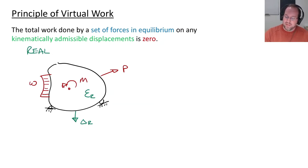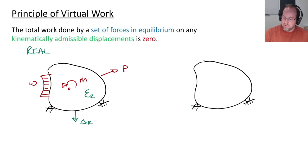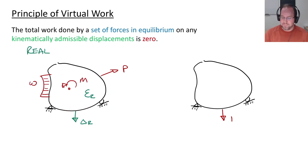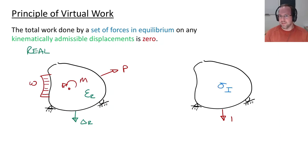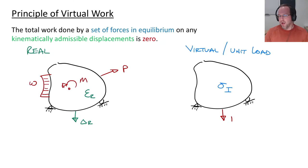Next we need a set of forces in equilibrium. I'll consider a second identical structure and apply a unit load of one in the direction and at the location where I want to calculate my displacement. For this system I can perform a structural analysis and calculate σᵢ — the stresses throughout the structure for the unit load. This is called the virtual system or unit load system, where the subscript i stands for the Roman numeral I, representing the unit load of one.